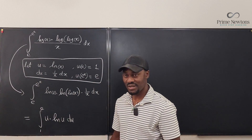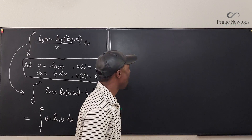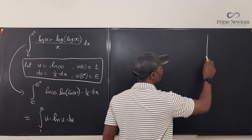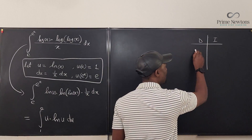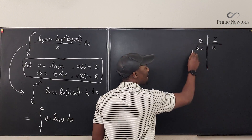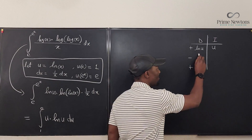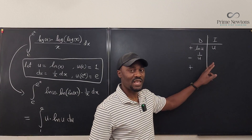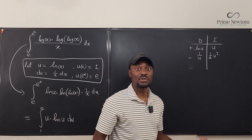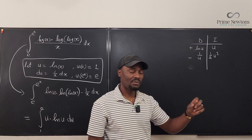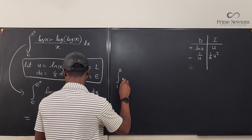Let's use the DI table for integration by parts. We always differentiate the natural log function, so ln(u) goes in the differentiate column, and u goes in the integrate column, with alternating plus/minus signs. Differentiating ln(u) gives 1/u, and integrating u gives (1/2)u². We stop here because multiplying diagonally gives a polynomial, which we know how to integrate.